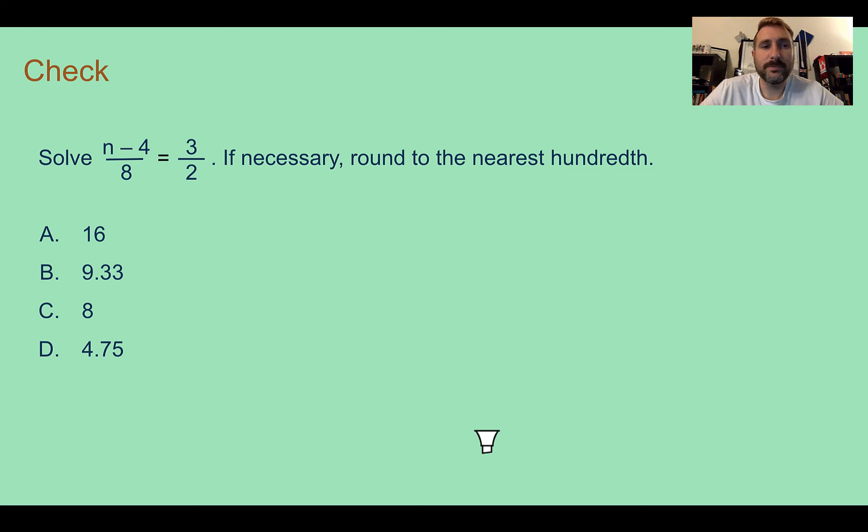Check your answer. Which value for n would give us a ratio of 3 over 2? So to do this, I'm simply multiplying by the denominator of where my variable is. So when I do that, I end up with n minus 4 equals 3 times 8 is 24 divided by 2 is 12. To solve for n, I would just add 4 to both sides. n is 16.